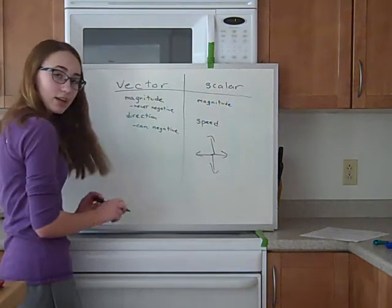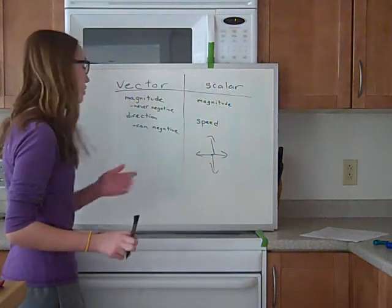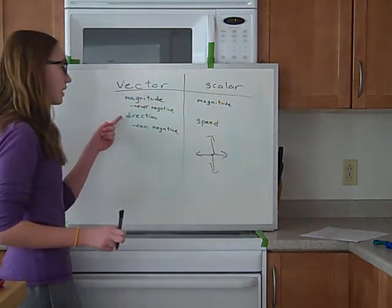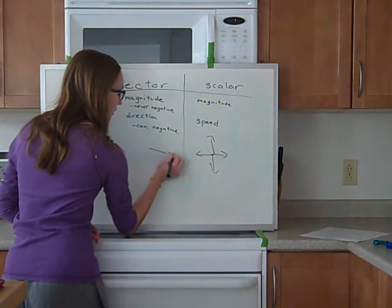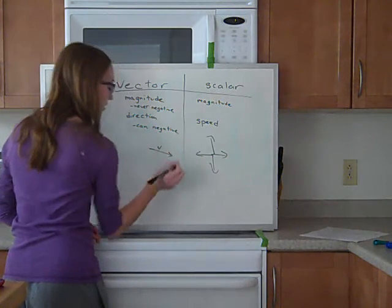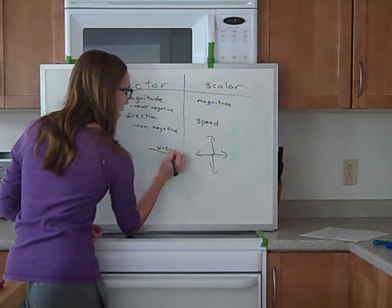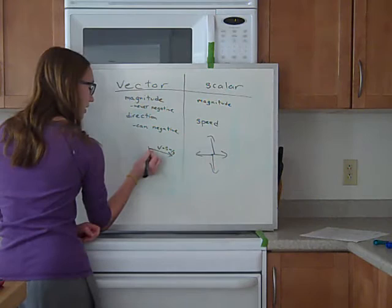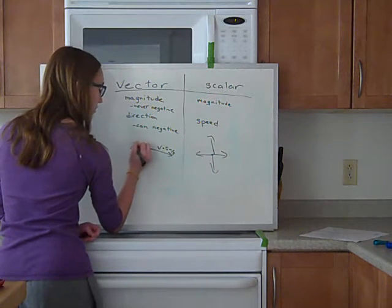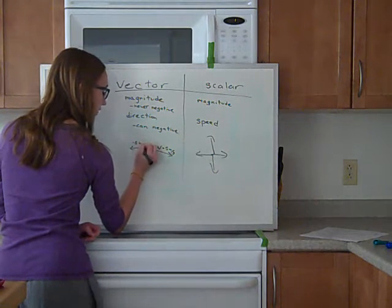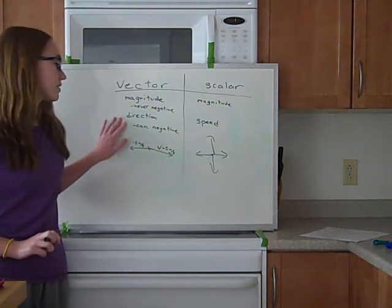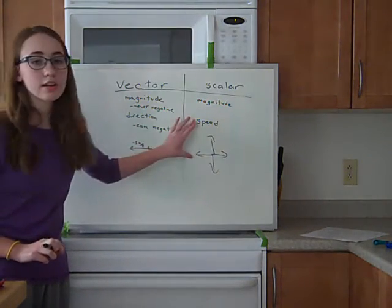Whereas, with a vector, if it's going in the negative direction, it's going to be negative because it has direction. So you could have velocity is 5 meters per second this way. But then if it goes in the negative direction this way, it's going to be negative 5 meters per second. That makes sense? Because vector can be negative, scalar cannot.